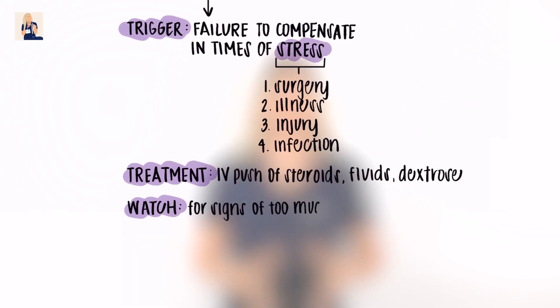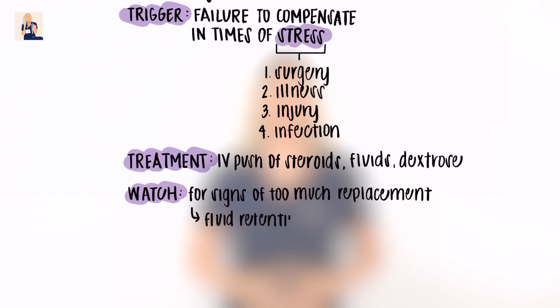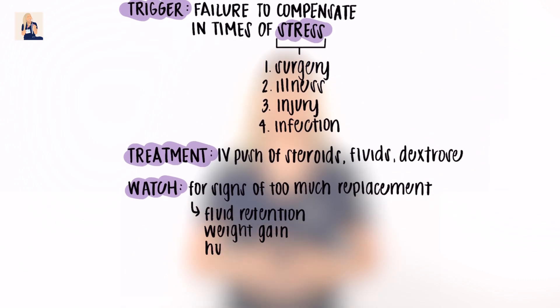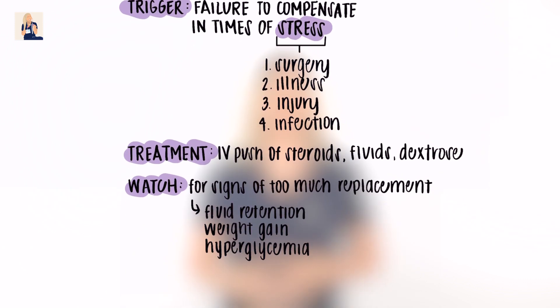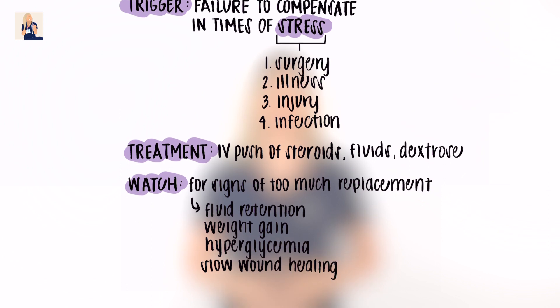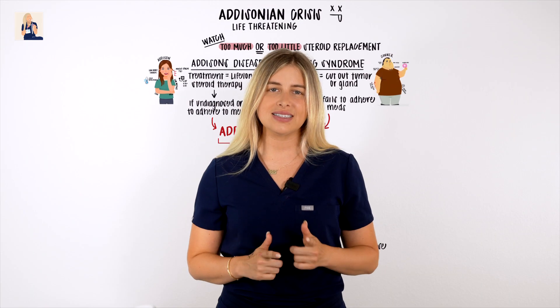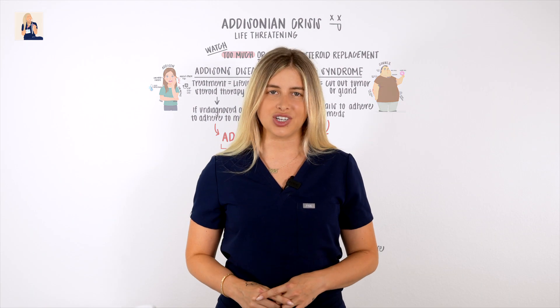We monitor for swelling from fluid retention and weight gain, hyperglycemia, risk for cataracts, and slow wound healing. And that wraps up Addison's disease and Cushing syndrome.